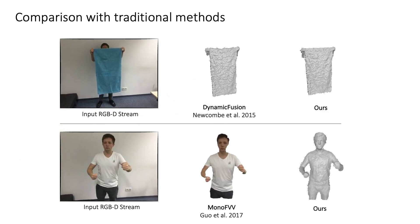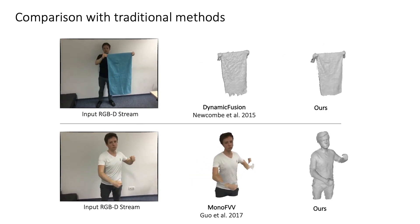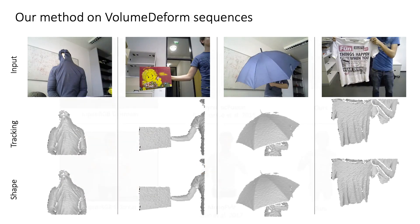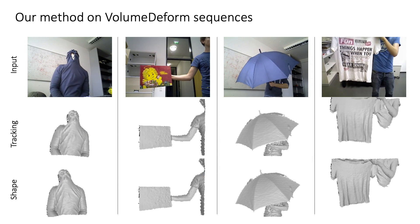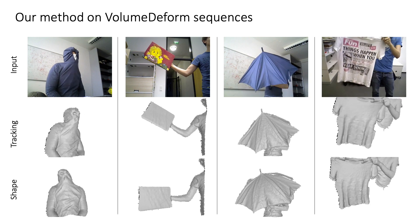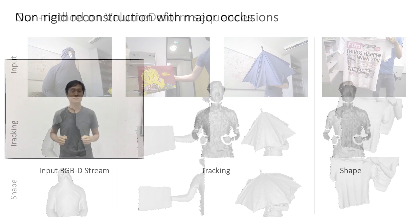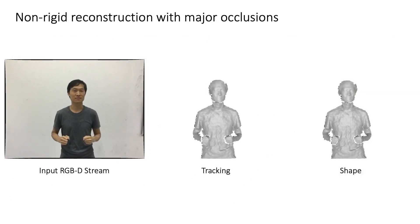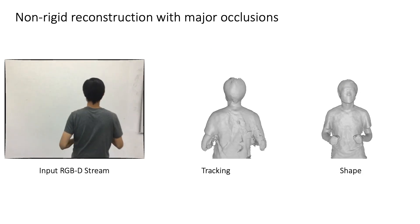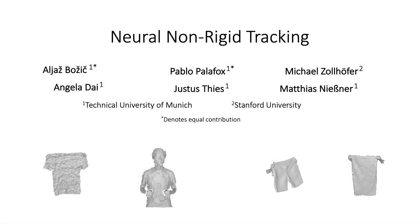We also compare to DynamicFusion and MonoFVV, which are based on hand-crafted correspondence matching. Additionally, we run our method on volume-deformed sequences, demonstrating that we can also generalize to a different structured light sensor. Notably, our approach can also handle major occlusions. Thank you for watching!